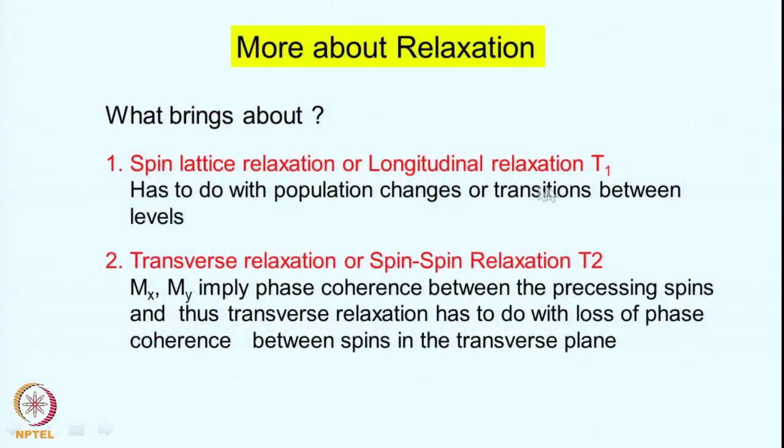Having described line shapes and how NMR signals are observed, we return to the question of relaxation in more detail, looking at its mechanistic aspects. Spin-lattice relaxation T1 has to do with population changes: transitions between energy levels cause population changes, and therefore the spin system relaxes.